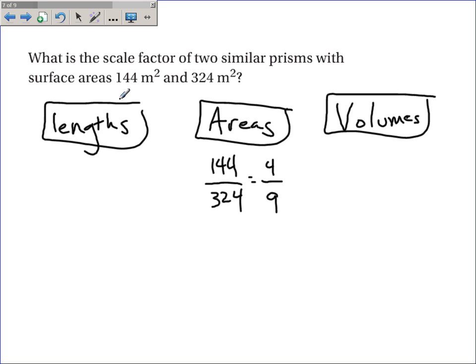Now, once I have the ratio of the areas to go backwards, this is a squared over b squared. And to find a over b, I need to go backwards. I need to take the square root of 4 and 9. Now, the square root of 4 is 2, and the square root of 9 is 3. And so, I get 2 thirds is the scale factor.